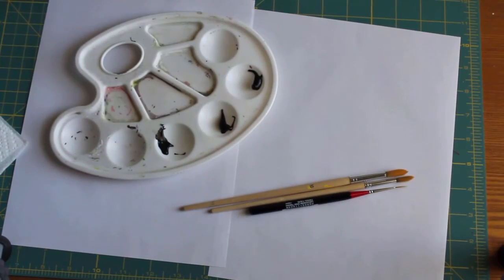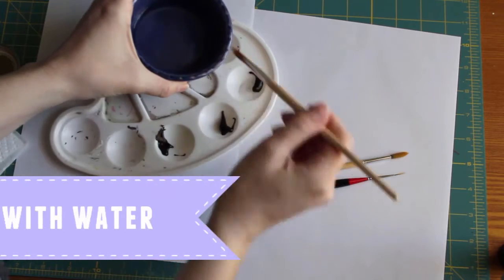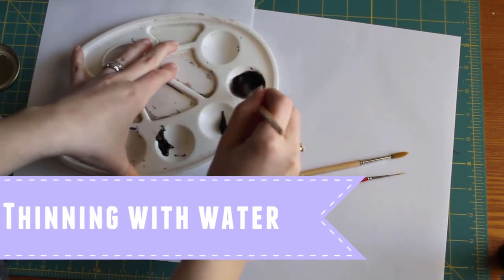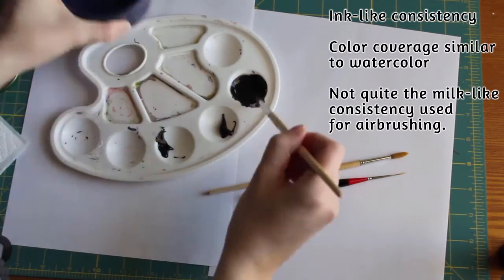We'll use the plain water first. It's the best option for most artists as it's readily available and gives good results. No matter what you're thinning with, you want your paint to have an inky consistency, almost like watercolor paint but not as thin as what you'd use if you were airbrushing.